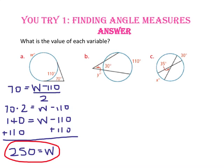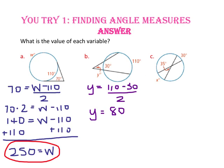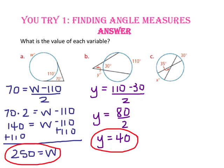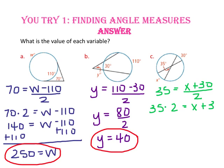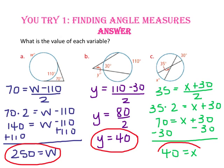In part B, we have two secants that intersect outside the circle, so the value of y will be half of 110 minus 30. 110 minus 30 is 80, divided by 2 is 40, so y equals 40. In part C, we have two chords that intersect inside the circle, so 35 degrees will equal x plus 30 divided by 2. Multiply both sides by 2 and 70 equals x plus 30. Subtract 30 from both sides and 40 equals x.